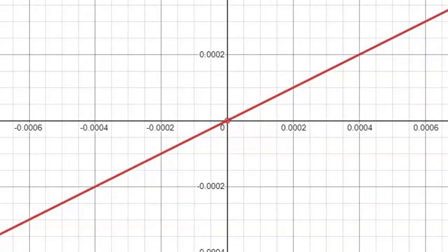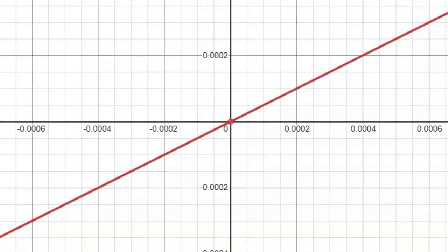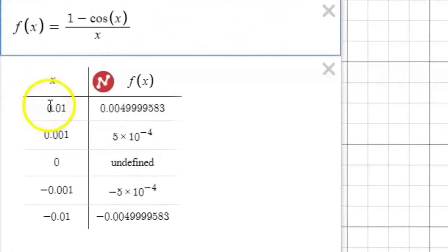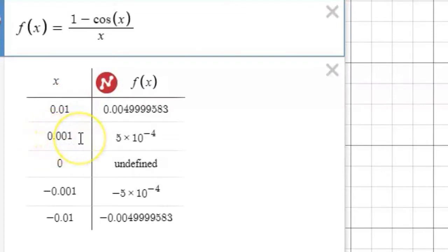We can confirm that by looking at a table of values. Let's specifically choose input values that are nearby to zero, like 0.01 or 0.001 or negative 0.01 and negative 0.001. And we see in the table output values that are getting closer to zero.